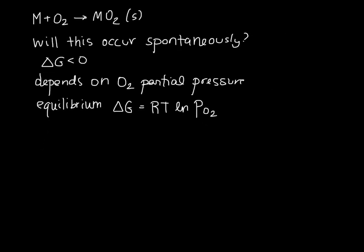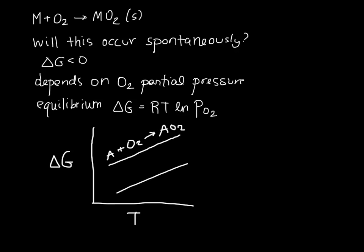If we had more than one metal available also, we could think about which oxide would form first. So let's consider a plot here that shows delta G as a function of T. And let's assume that we have a couple of different reactions going on. So we have A plus O2 forming AO2, or we have, let's say, B plus one-half O2 forming BO.